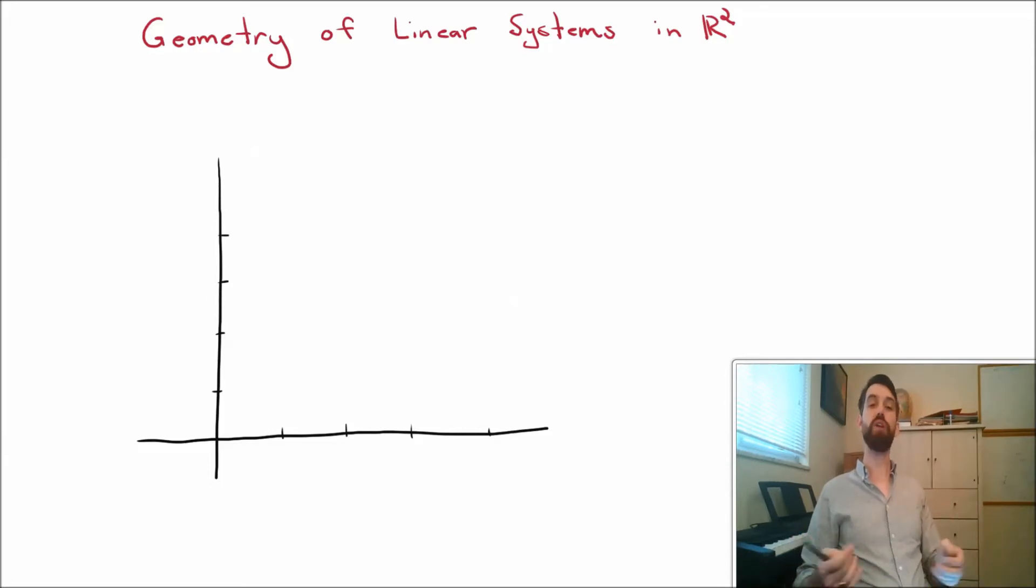So let's just start to scratch the surface of what this looks like for systems of linear equations in two dimensions. Now, I'm going to begin not with a system. I'm going to begin with a single linear equation in two dimensions. I'm going to imagine this equation, 2x plus y is equal to 4.